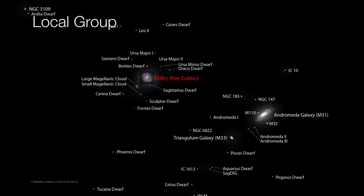Now the Milky Way is one of the two largest galaxies of a local group of galaxies called the Local Group. It's not the most exciting name, but there it is.